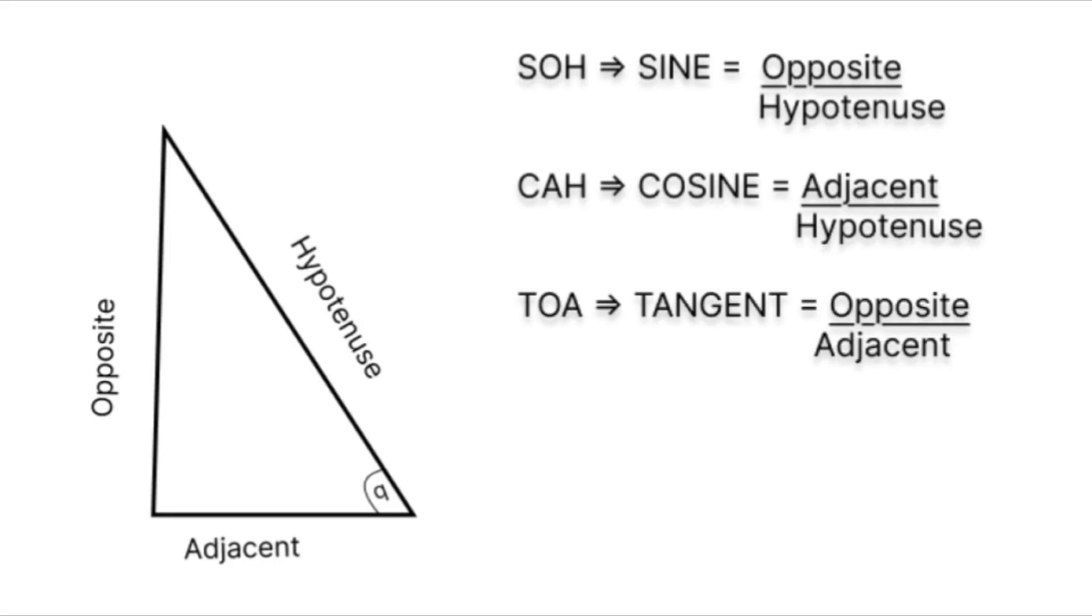SOH means sine is opposite over hypotenuse. CAH means cosine is adjacent over hypotenuse. TOA means tangent is opposite over adjacent. These only work when we're working with right triangles, which is perfect, because that's exactly the kind of triangle we've built here.